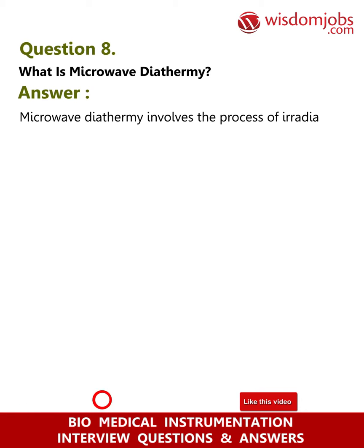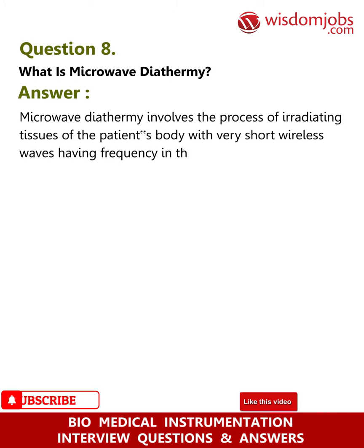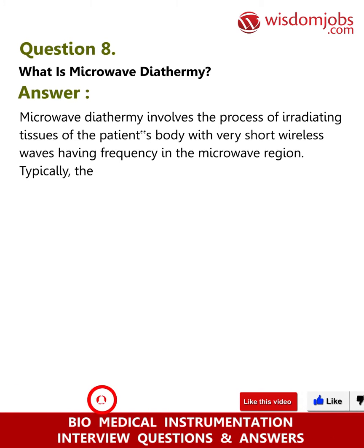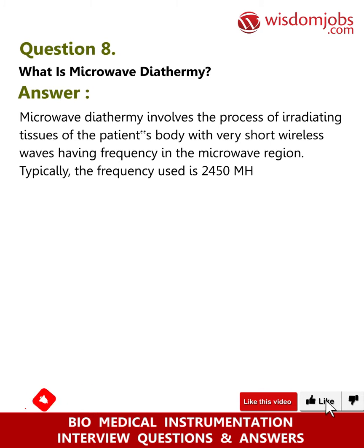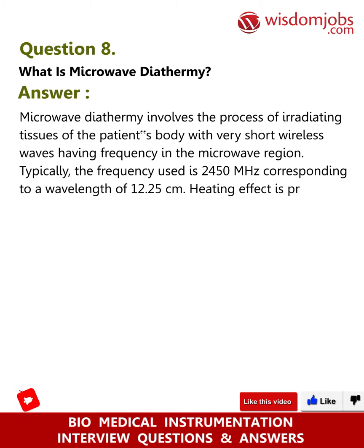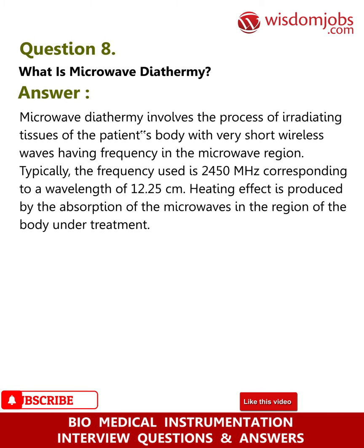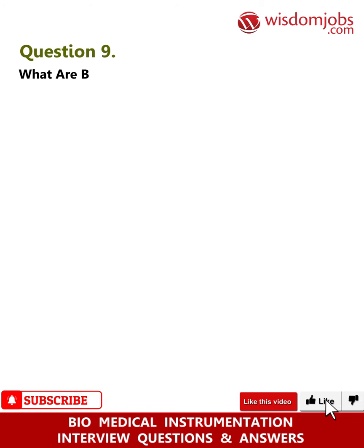Question 8: What is microwave diathermy? Answer: Microwave diathermy involves the process of irradiating tissues of the patient's body with very short wireless waves having frequency in the microwave region. Typically, the frequency used is 2450 MHz, corresponding to a wavelength of 12.25 centimeters. A sweeping effect is produced by the absorption of microwaves in the region of the body under treatment.